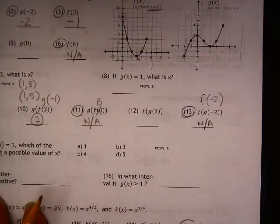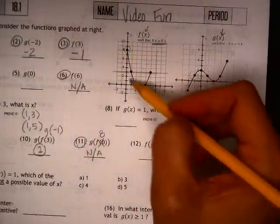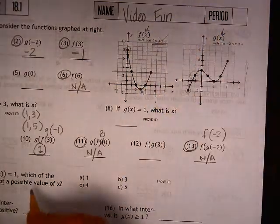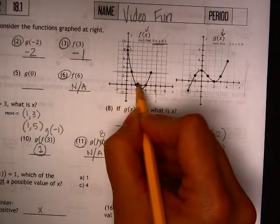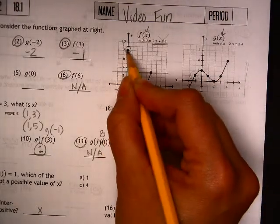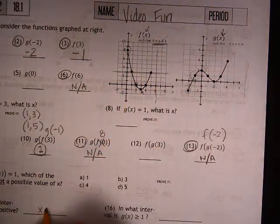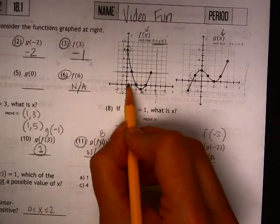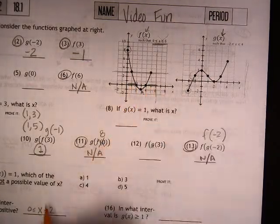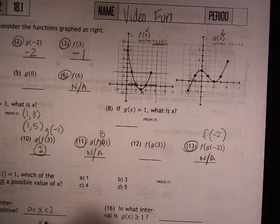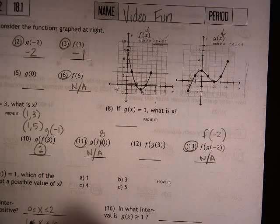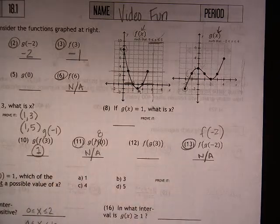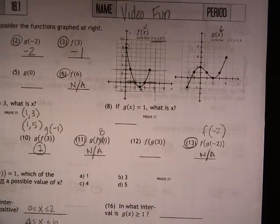Problem 15 asks, in what interval is this function positive? We actually have two intervals where it's positive: between 0 and 2, and between 4 and 6. So it's really just negative in one interval, between 2 and 4.